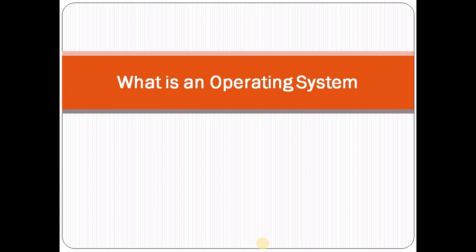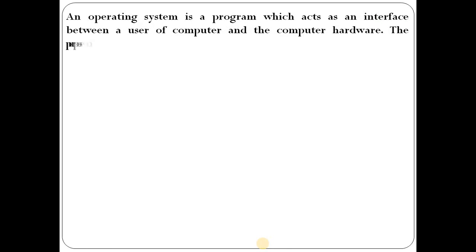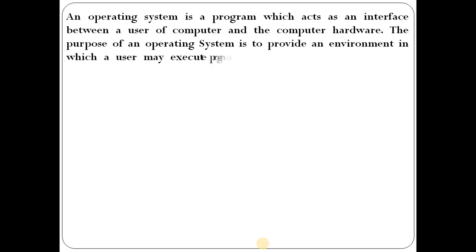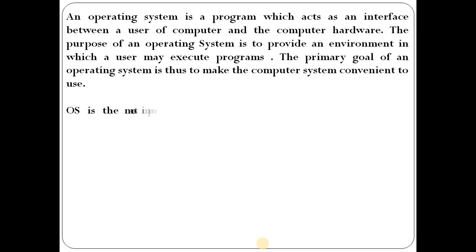First, what is an operating system? An operating system is a program which acts as an interface between a user and the computer hardware. The purpose of an operating system is to provide an environment in which a user may execute programs. The permanent goal of an operating system is to make the computer system environment easy to use.